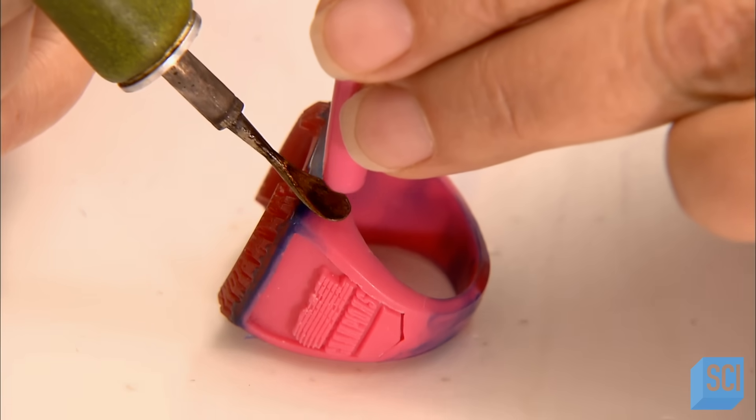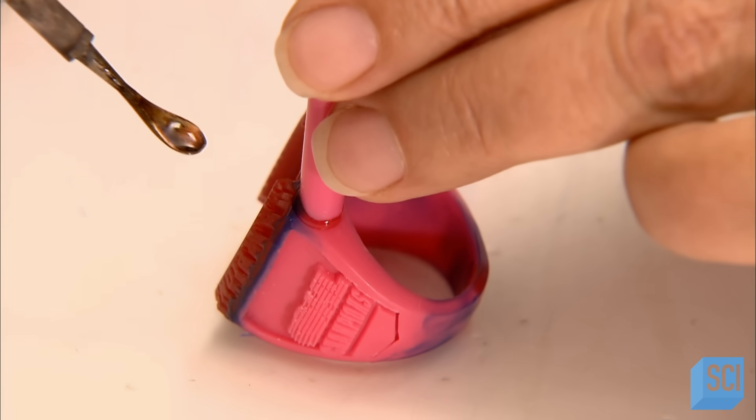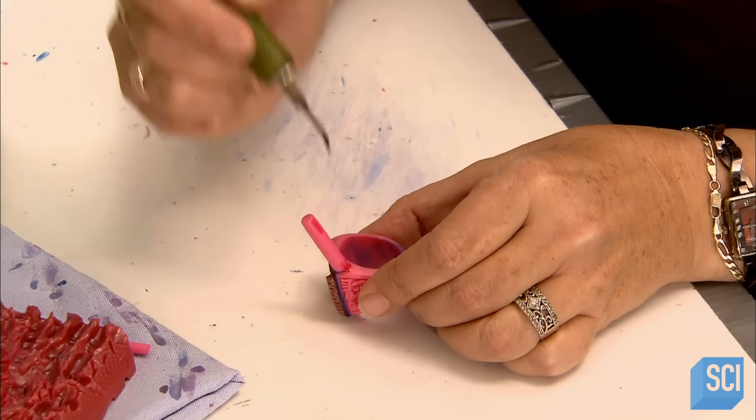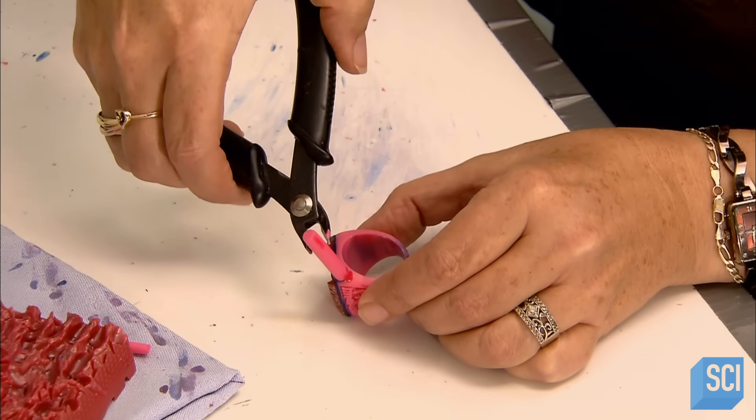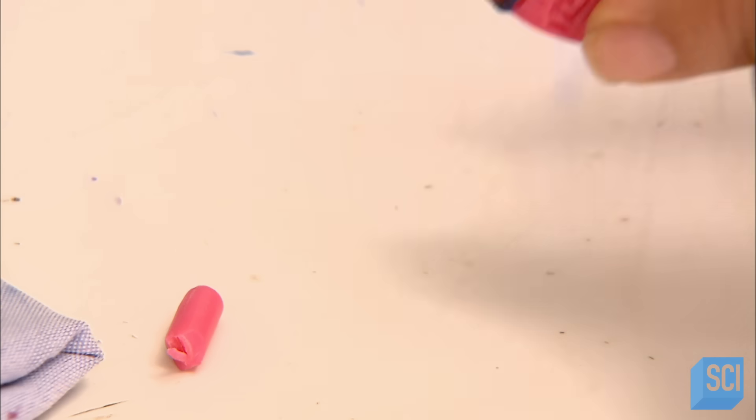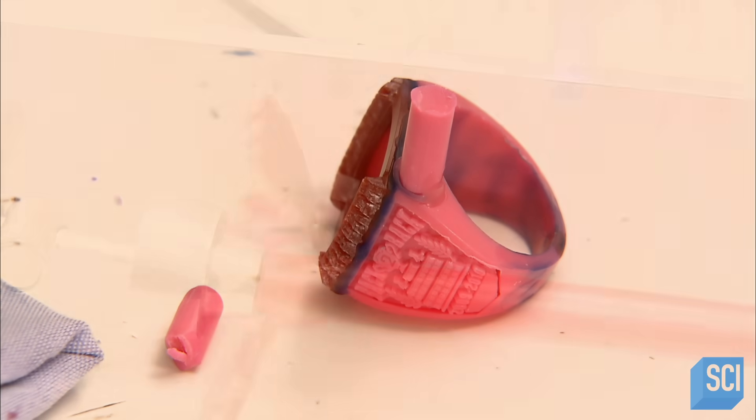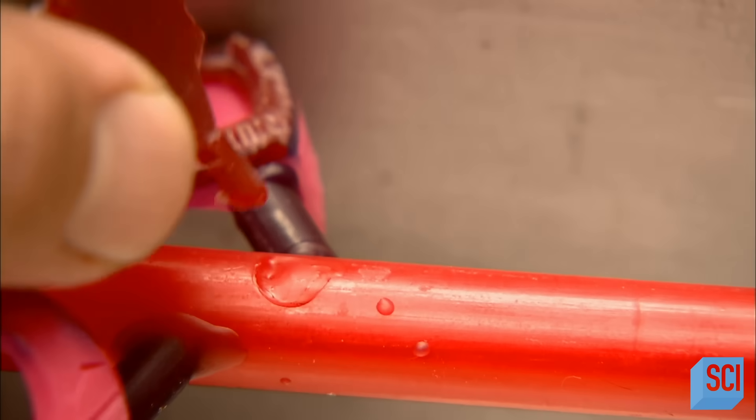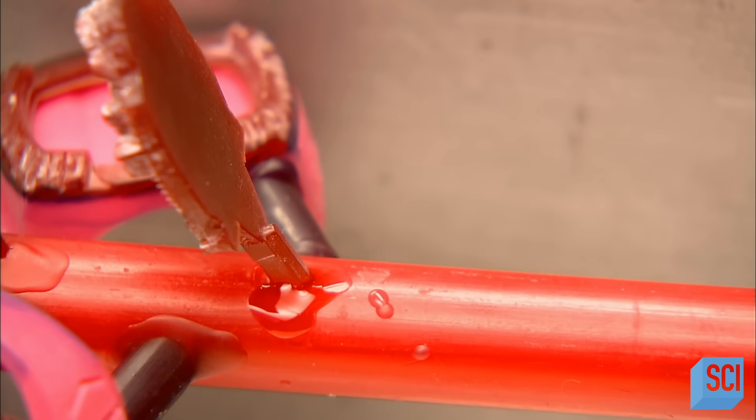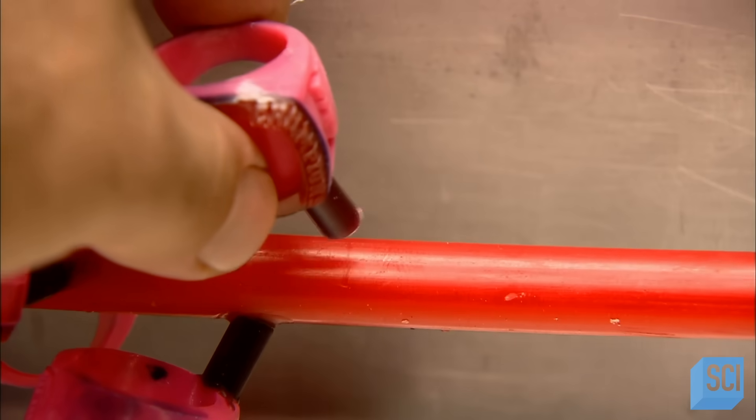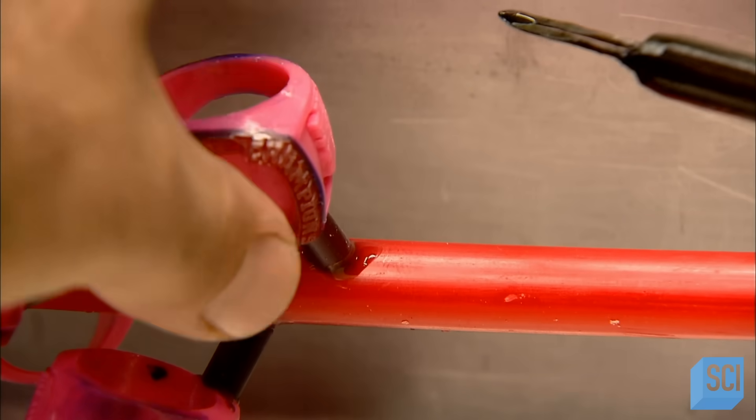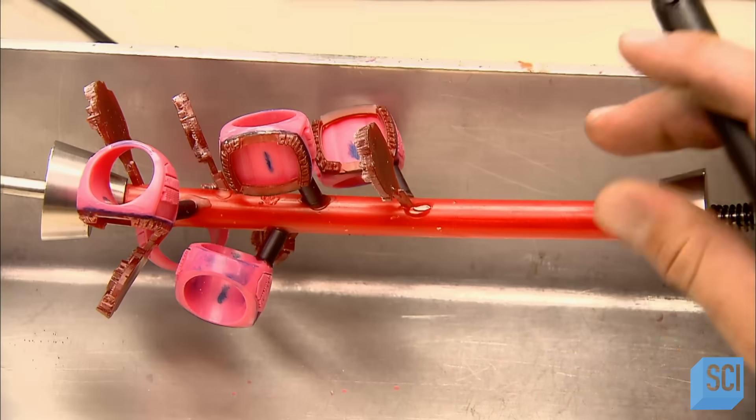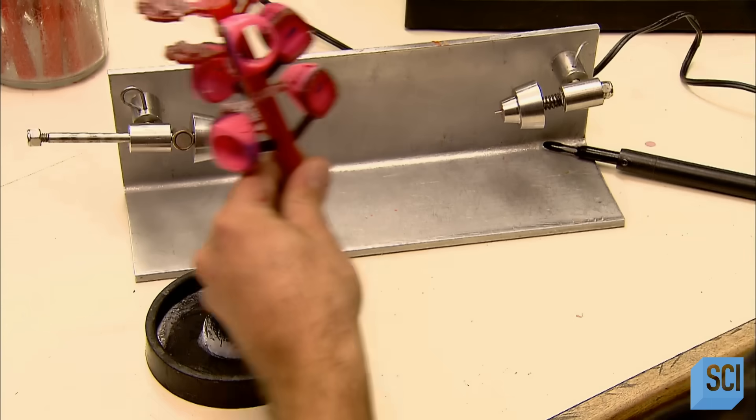Next, they begin building a wax structure on which to mount the wax models, for several rings they'll be casting simultaneously. They solder a small stem to each model, then connect each stem to a large wax rod. When they're done, they have a tree-like structure holding all the wax models.